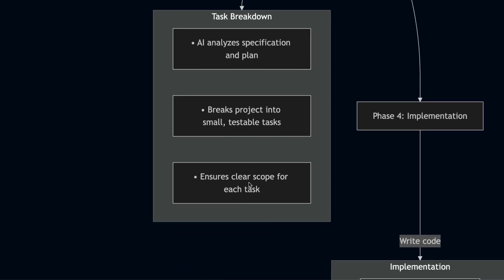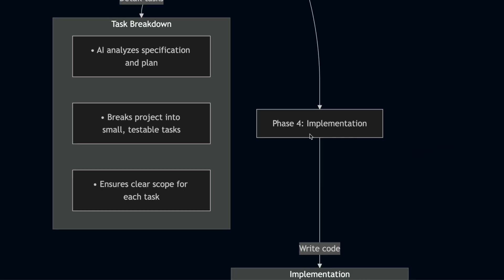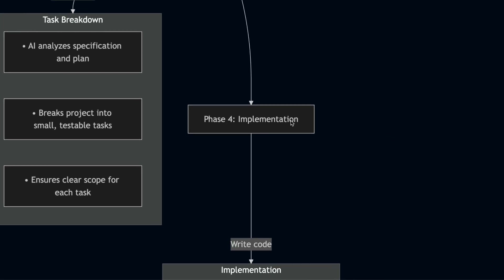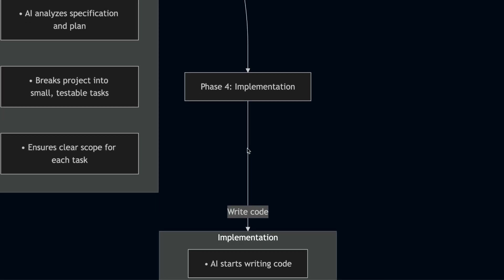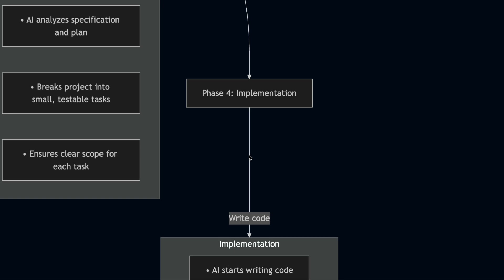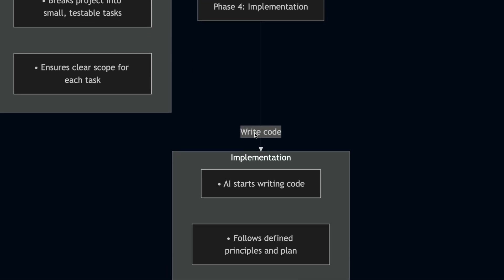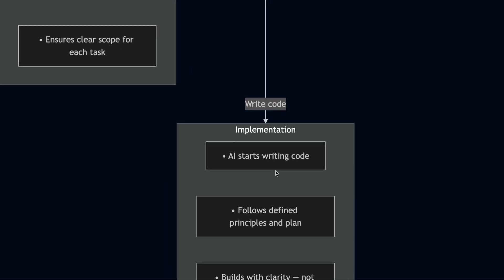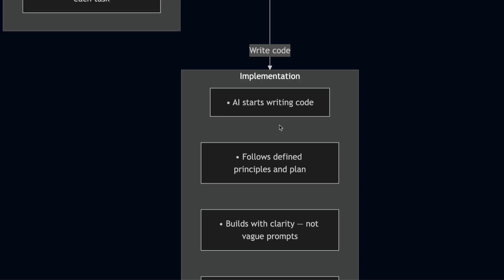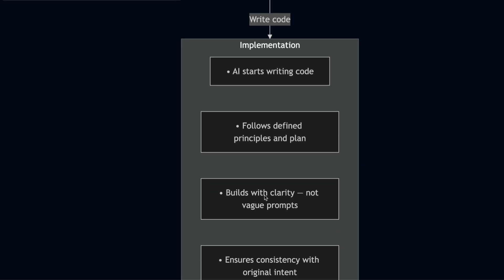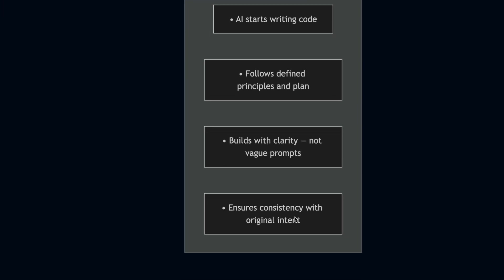Finally, you have the implementation phase — this is where the AI actually starts writing code. But here is what makes it different from vibe coding: the AI is not just generating code based on a vague prompt. It knows exactly what it is supposed to build because the specification told it.